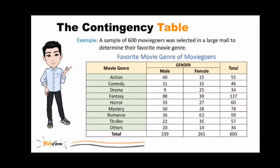And here's the contingency table for the given. This type of table cross-tabulates or tallies jointly the responses of the categorical variables. In this example, it's the movie genre and the gender. So if you want to know how many females like thriller, you can refer to this cell, which is the intersection of the thriller row and the female column.